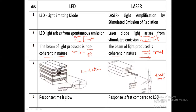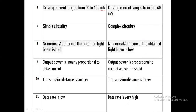The response time is slow in LED whereas it is very fast in laser. Response time is how fast an input drive signal can vary the light output level — that is, how fast the electrical input can vary according to the light output. In LED, this process is a little bit slower, whereas in laser the response time is faster.